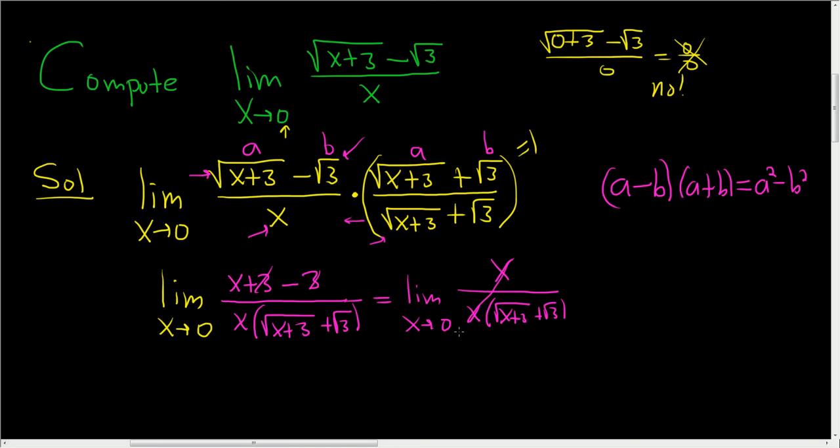Let's write it one more time. So limit as x approaches 0, and we have 1 over the square root of x plus 3, plus the square root of 3. And at this point, we can finally plug in 0. We tried to do that at the beginning of the problem, and it didn't work. So now we can do it.